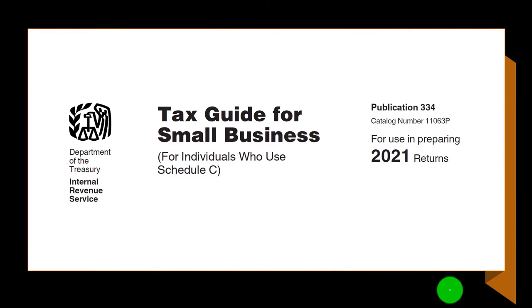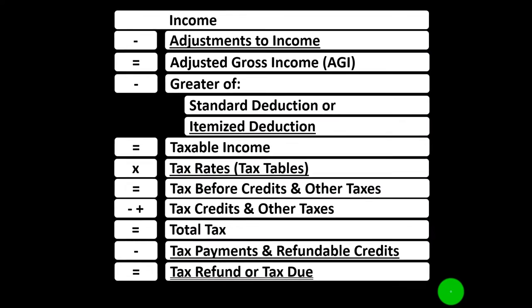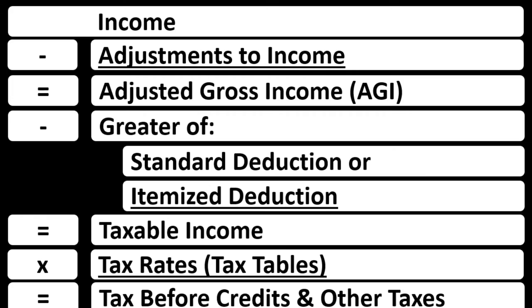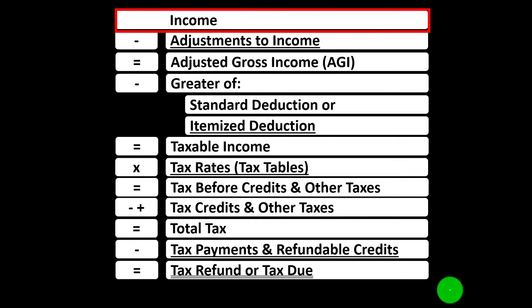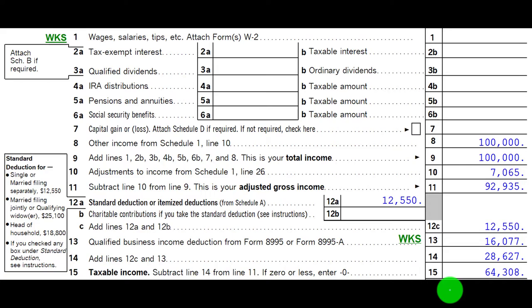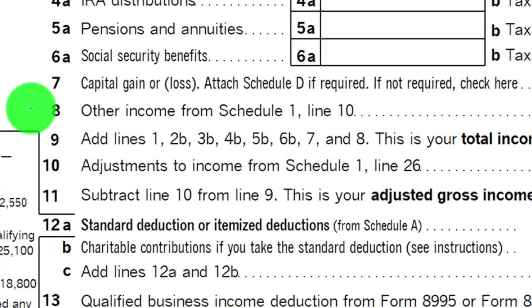Most of this information can be found in Publication 334, Tax Guide for Small Business, 2021 tax year. Looking at the tax formula line one income, having a supplemental schedule that would feed into it — basically an income statement of income and expenses — with the net then flowing into line one income of the income tax formula, as well as page one of Form 1040. The Schedule C flows into Schedule 1, which flows into line eight of the first page of Form 1040.